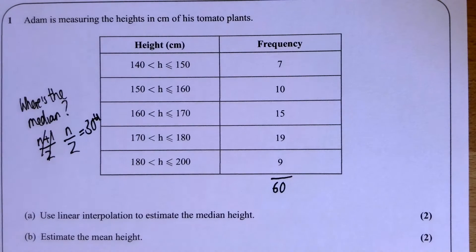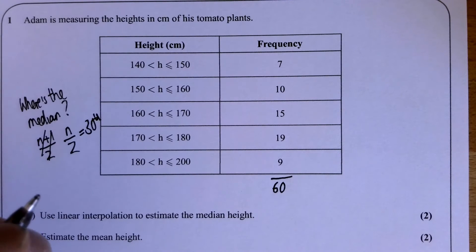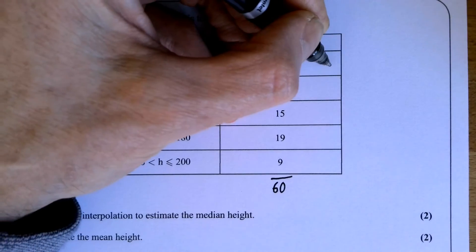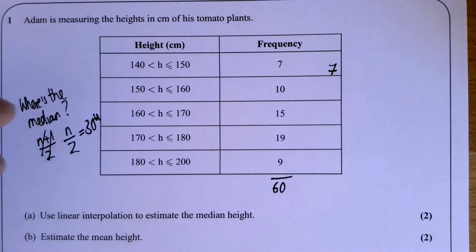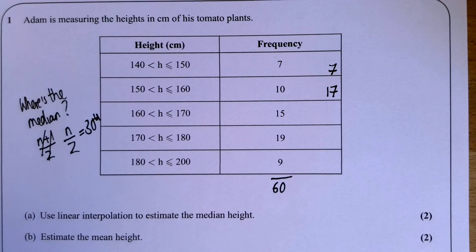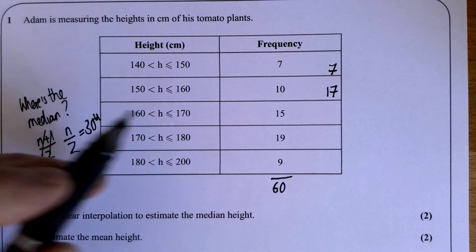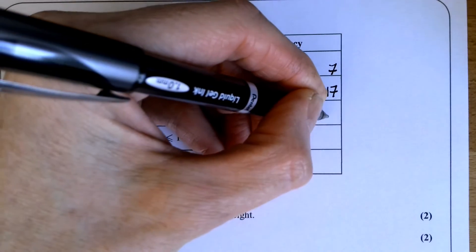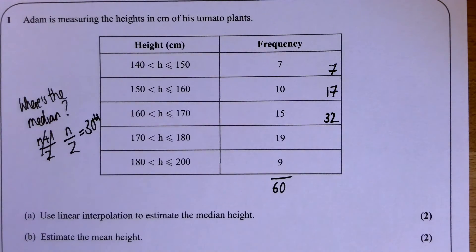So most of the time we just say, let's divide the data into two, so we're looking for the 30th value. Now if you do between the 30th and the 31st, that's fine; the mark scheme will allow for either. But I'm going to say 60 values, the median, half of that is 30. I'm looking for the 30th value. So this is about cumulative frequency. By the time I get to 150 centimeters, I've counted seven people. By the time I get to 160, I've counted 17 people.